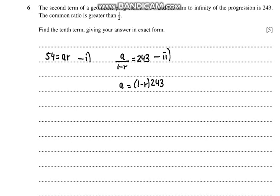It says the common ratio is greater than half. Find the tenth term giving your answer in exact form. Let's substitute this a from equation 2 into equation 1. So this would become 54 equals (1 - r) times 243 multiplied by r. So this would become 54/243 equals r - r².